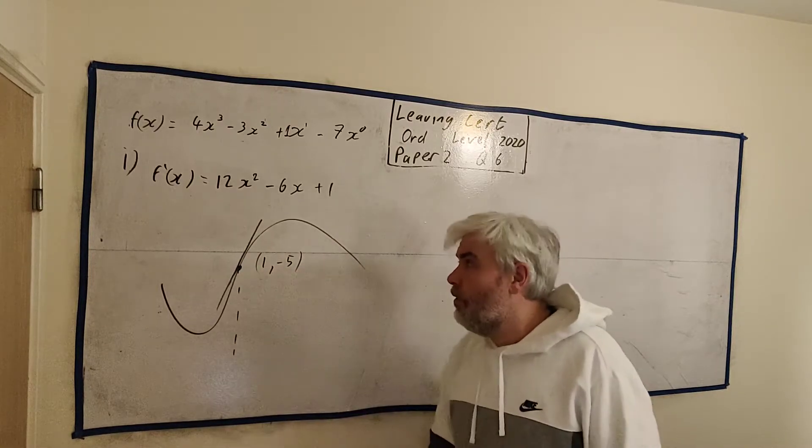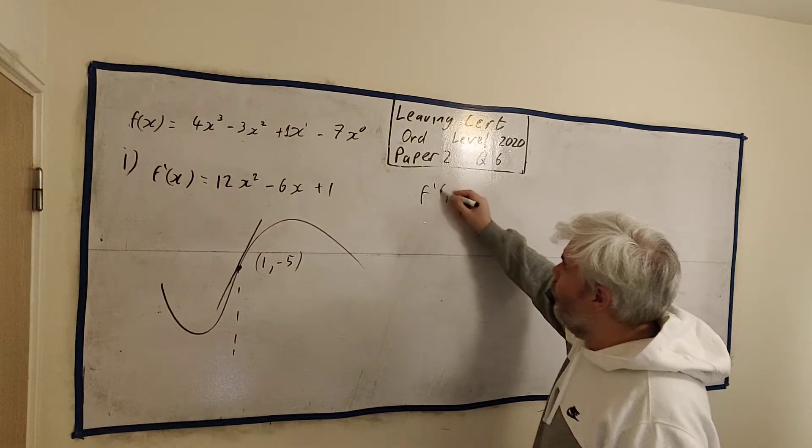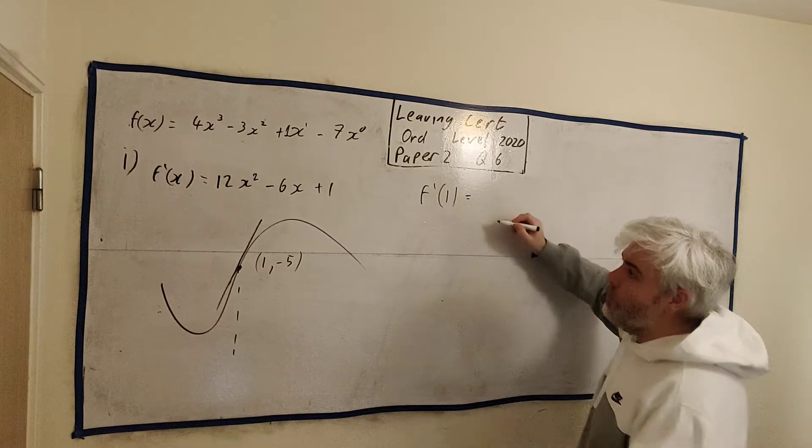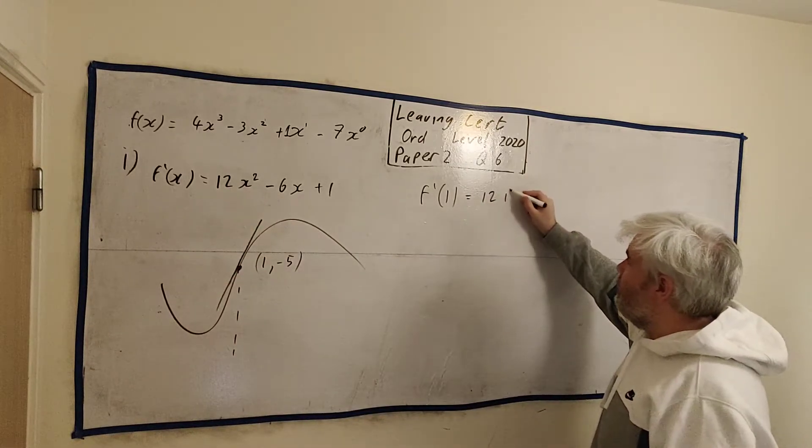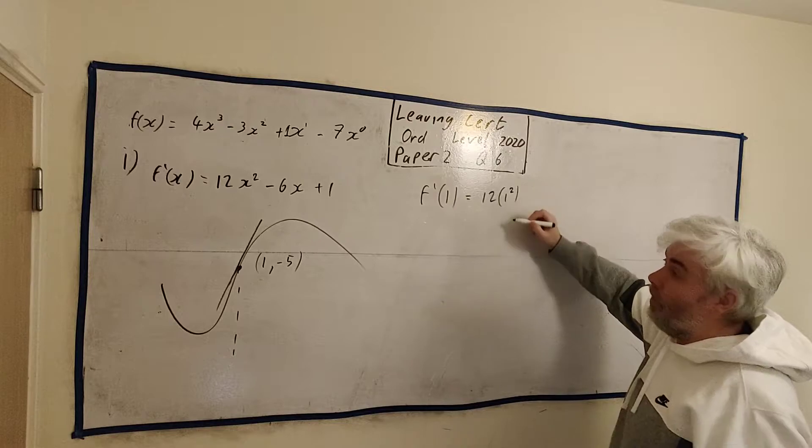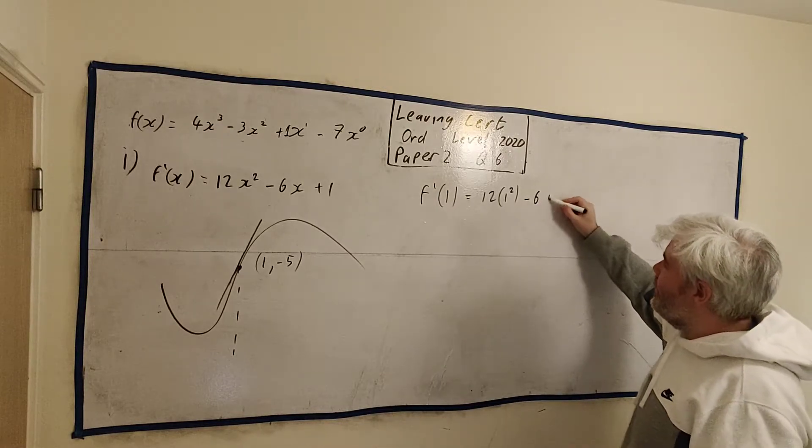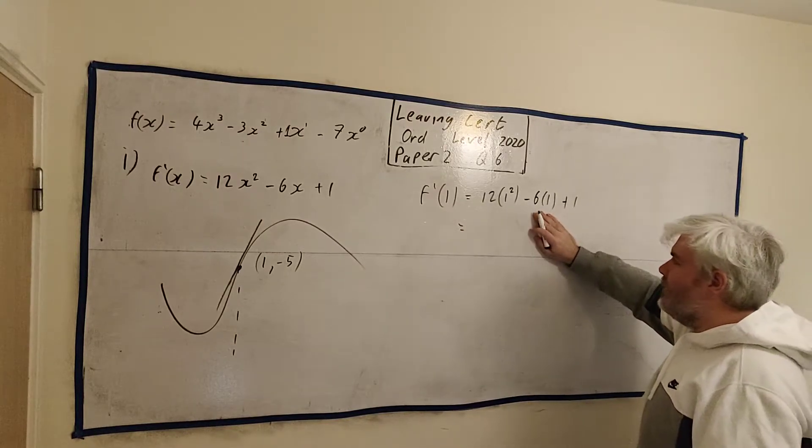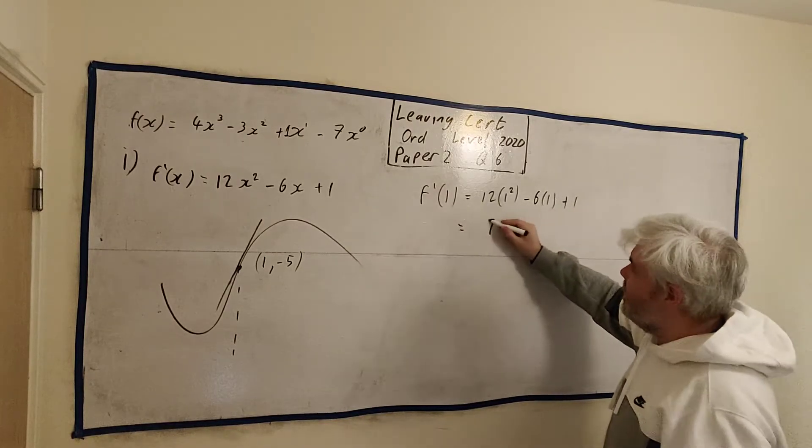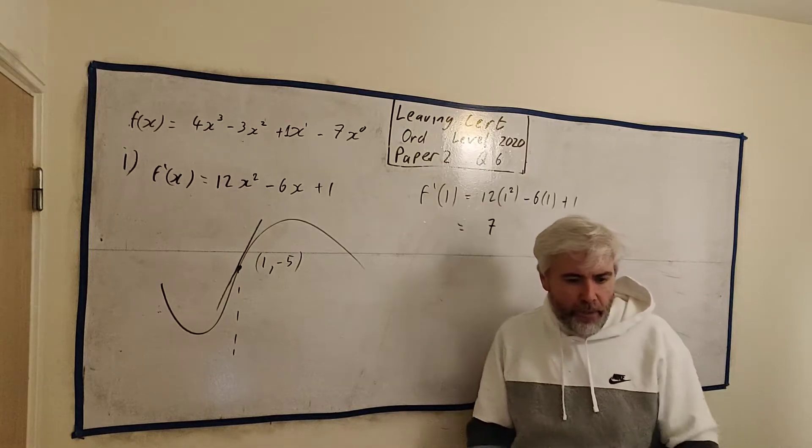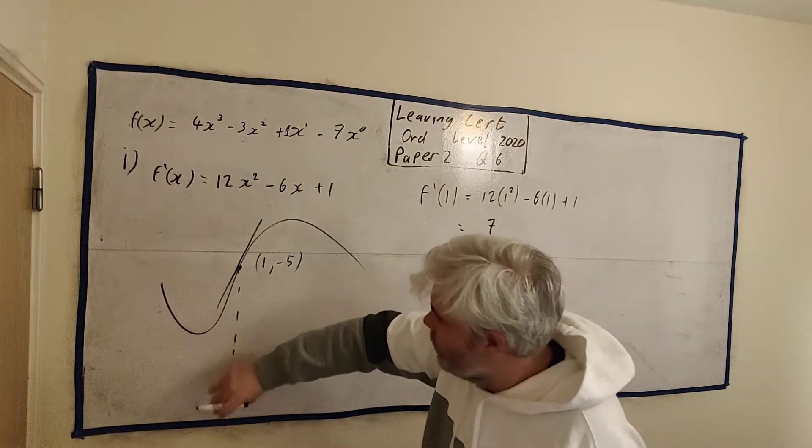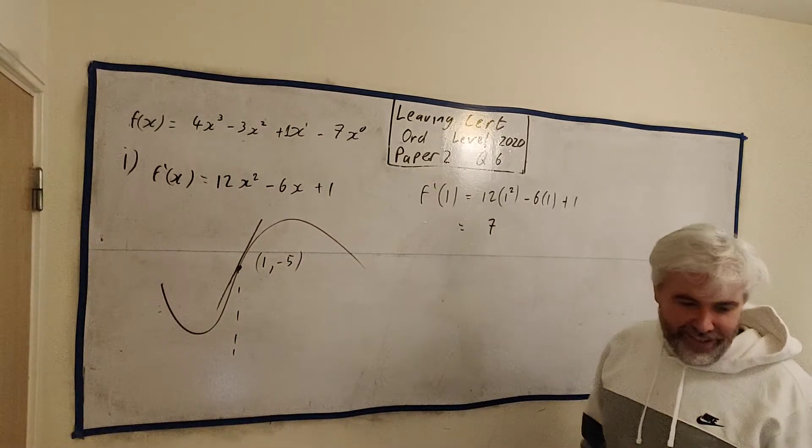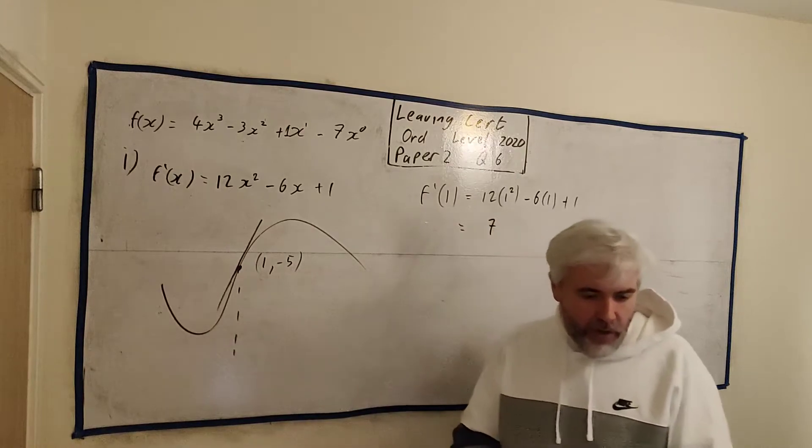So to find the slope, we just put 1 into this derivative function. We get 12 times 1² minus 6 times 1 plus 1. So this is 12, take away 6, add 1 onto it. That's 7. So the slope at this point is 7. My drawing wasn't too bad then because 7 goes up fairly fast from left to right.